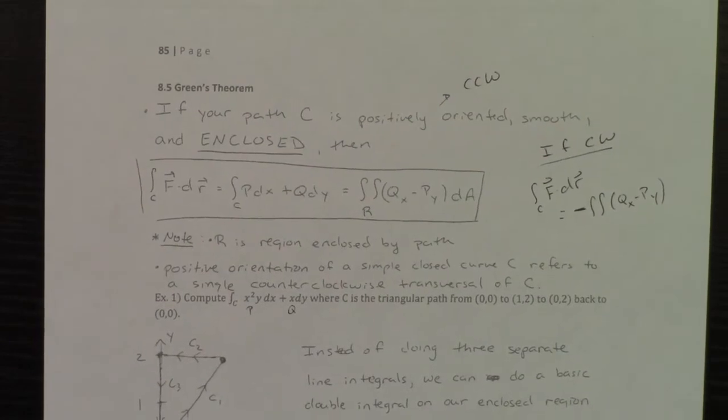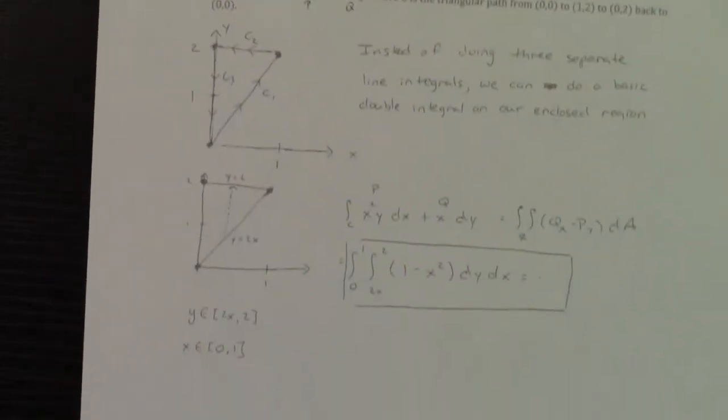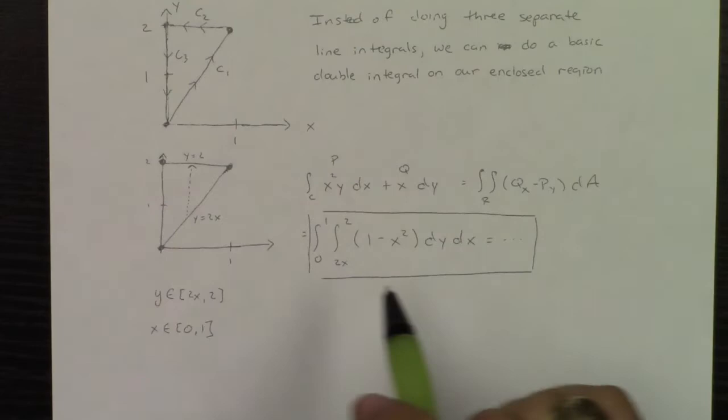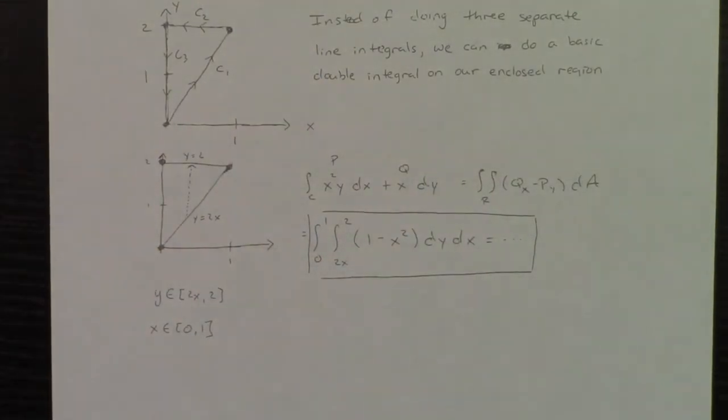Let's try another one. Let's try a couple more of these to really make sure that you understand how Green's theorem works. All I did, double integral over that region, qx minus py, because I was going counterclockwise.